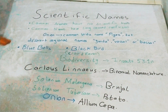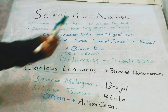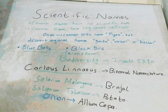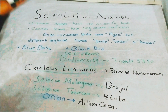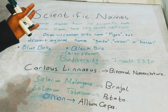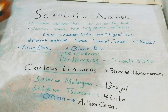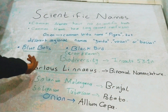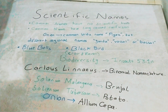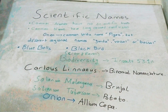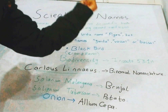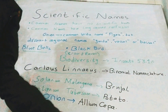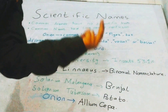There should be one scientific name for each species, because each species is distinct. Carolus Linnaeus was a scientist who used binomial nomenclature to name plant and animal species. In 1753 he published his list of plant species, and in 1758 he published the scientific names of animal species.